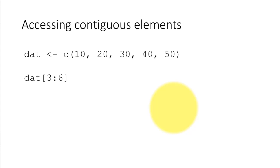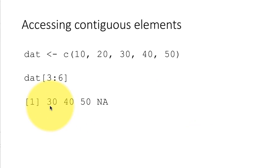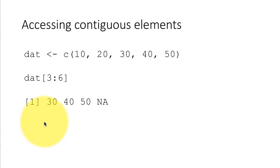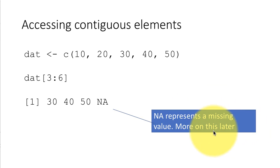Now let's try dat[3:6], where the sixth element doesn't exist — this vector has only five elements. What result do you get? You get 30, 40, 50, and NA. NA represents an unknown quantity; when something is unknown, R represents it as NA. It's saying the sixth element is unknown, so it cannot give you a definitive result. R could have given an error for accessing a non-existent element, but instead it shows NA as a missing value, and we'll discuss NA in more detail later.